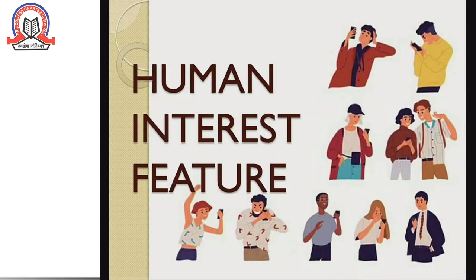Next up: human interest features. While personality features are generally written about a known personality, human interest features can be written about ordinary people for their extraordinary contribution to society. They can also be written on some interesting aspects about a famous personality. For example, a feature on a common man becoming the Chief Minister of Delhi, or a poor girl getting a top position in the 10th board exam, falls in this category.